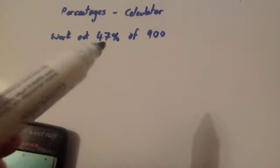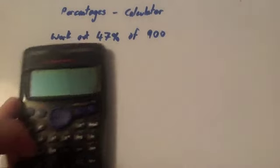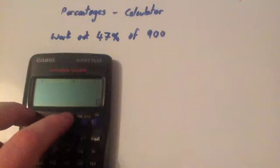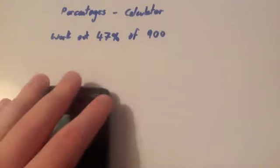The first question we're going to look at is working out 47% of 900. Whenever you're using a calculator for percentages questions, what I personally recommend is that you find 1%. Remember, to find 1% of a number, you divide by 100.